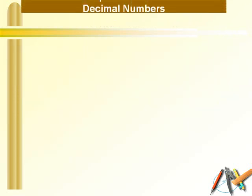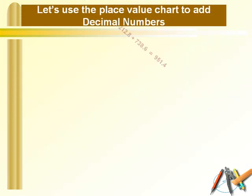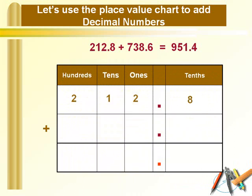Now let's use this place value chart to add the numbers. For example, we need to add 212.8 and 738.6. First of all, place these numbers in a place value chart. Now let's add the digits on the right of the decimal point. So 8 plus 6 gives us 14. Place the 4 below 8 and 6, and take the 1 on top of the digits at the 1's place.